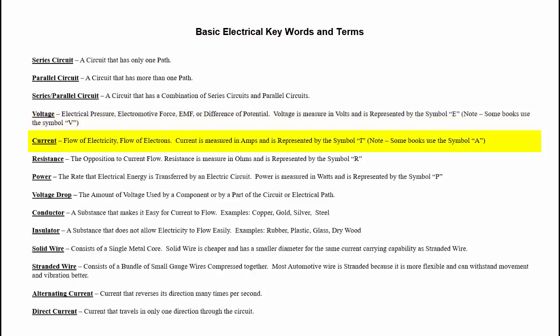Current is the actual flow of electricity, or flow of electrons. Current is measured in amps and represented by the symbol I. Note again that some books use the symbol A. Oftentimes if they're using V for voltage, they'll use A for current.